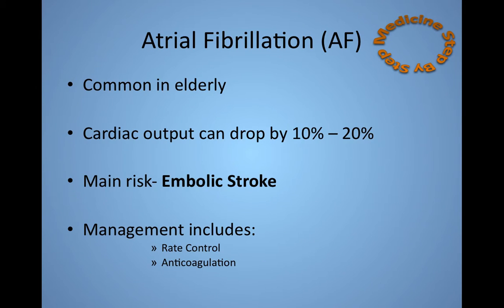AF is common in the elderly. Between 5-10% of those aged above 65 have AF. Problems encountered with AF include that cardiac output can drop by 10-20%. The main risk with AF is clot formation and an embolic stroke. The mainstay of management involves rate control and anticoagulation.